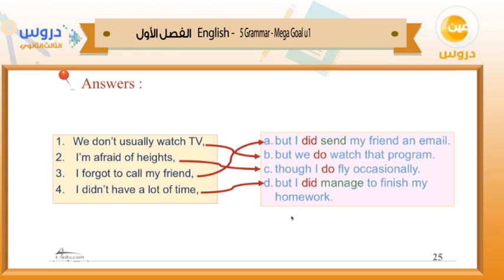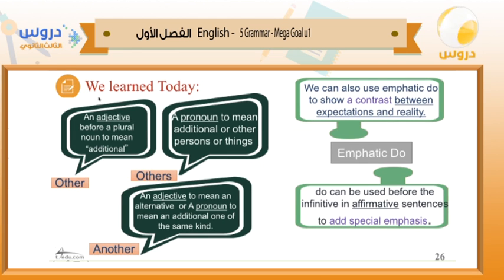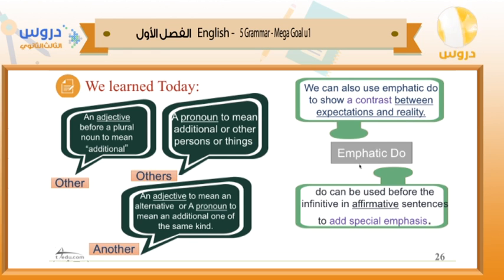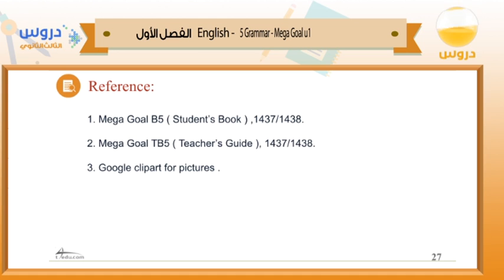Is that clear? This is our lesson today. We learned about 'other' as an adjective before a plural noun meaning additional; 'others' as a pronoun meaning additional or other persons or things; and 'another' as an adjective meaning an alternative, or as a pronoun meaning an additional one of the same kind — used with singular. Emphatic 'do' can be used before the infinitive in affirmative sentences to add special emphasis, or to show a contrast between expectation and reality.